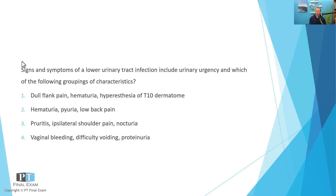Signs and symptoms of a lower urinary tract infection include urinary urgency and which of the following groupings of characteristics? One: dull flank pain, hematuria, hyperesthesia of T10. Two: hematuria, pyuria, and low back pain. Three: pruritus, ipsilateral shoulder pain, nocturia. And four: vaginal bleeding, difficulty voiding, proteinuria.